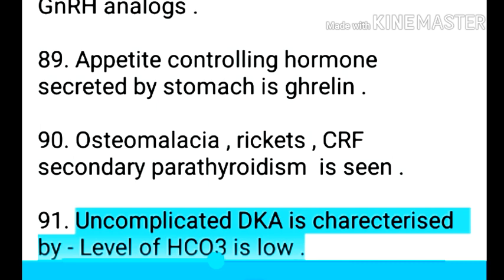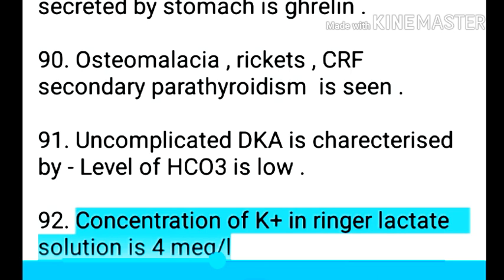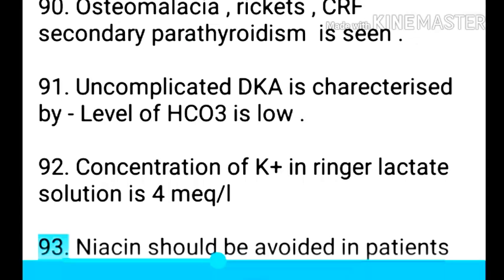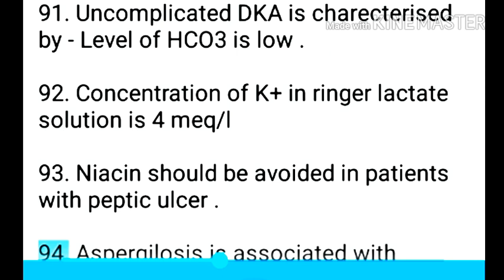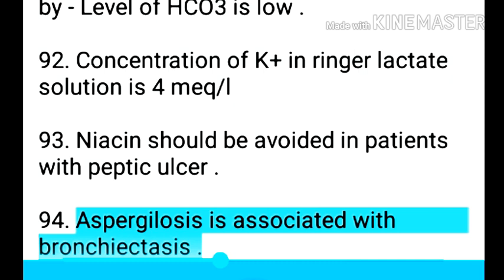Point 92: Uncomplicated DKA is characterized by — level of HCO3 is low. Point 93: Concentration of K+ in Ringer lactate solution is 4 mEq/L. Point 94: Niacin should be avoided in patients with peptic ulcer.